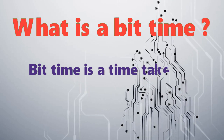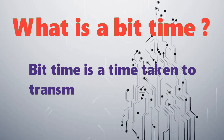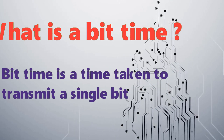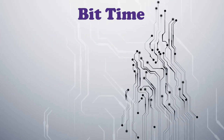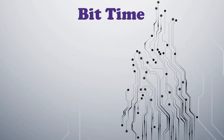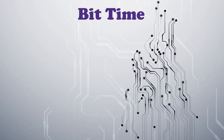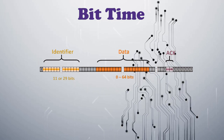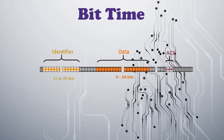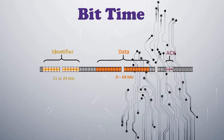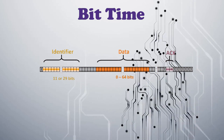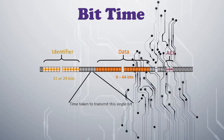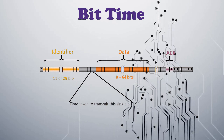Bit time is the time taken to transmit a single bit. We will take our own CAN frame for this. We know a CAN frame is made up of multiple bits, so the time taken to transmit a single bit like this is the bit time.